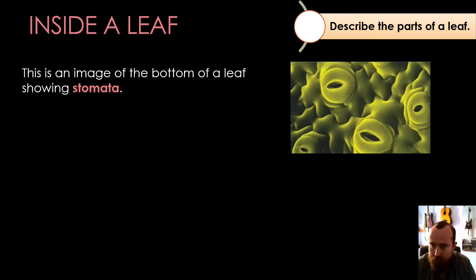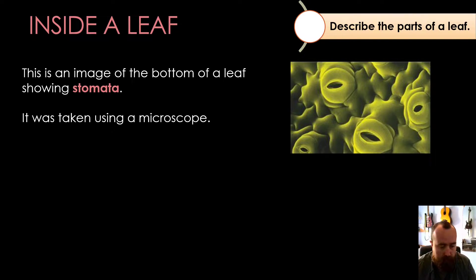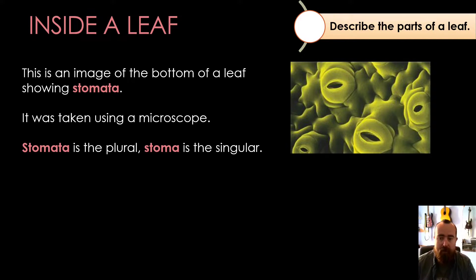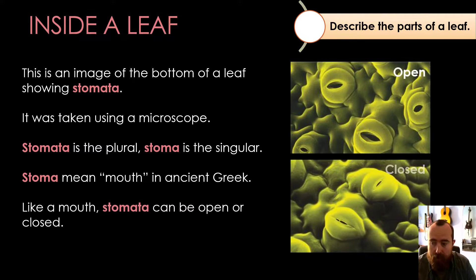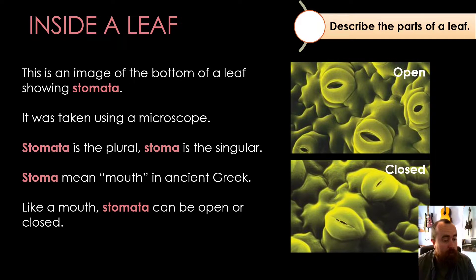Here's a diagram showing stomata taken using a microscope — they look like little mouths, which is why they're called stomata. Stomata is the plural; stoma is the singular, and it means mouth in ancient Greek. Like a mouth, stomata can be either open or closed. The diagram shows what it looks like when stomata are closed, and when they're open — it's a hole on the bottom of the leaf that the plant can open up or close.